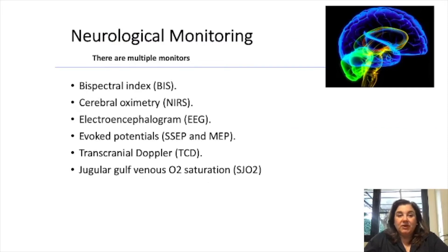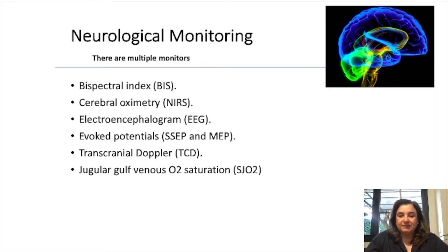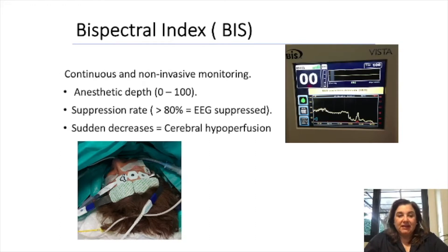There are multiple monitors for neurological function, like bispectral index, cerebral oximetry, electroencephalogram, evoked potentials, transcranial Doppler and jugular bulb venous oxygen saturation. Bispectral index is a continuous and non-invasive monitoring; it measures anesthetic depth. A suppression rate higher than 80% informs us about electroencephalogram suppression.